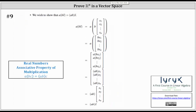Step nine: we show that a times (b times vector x) equals (a times b) times vector x. We first perform scalar multiplication with b, then with a. Once inside one column matrix, we use the associative property of multiplication to change grouping from around b and the x components to around a and b. Factoring out the product of a and b gives us (ab) times vector x, which is what we are trying to prove. Step nine is complete.